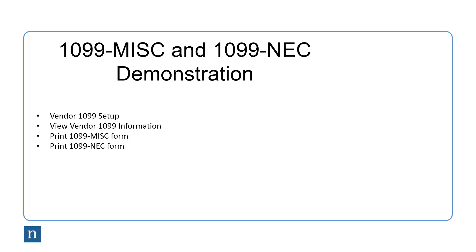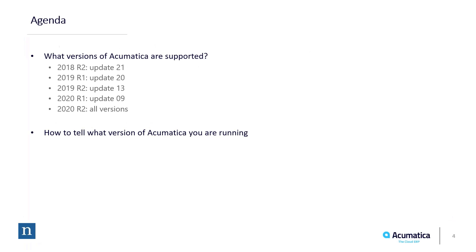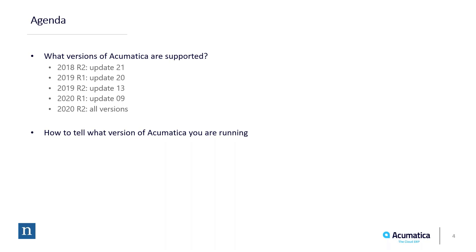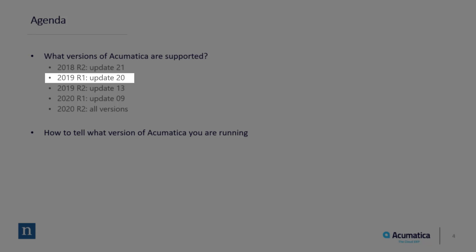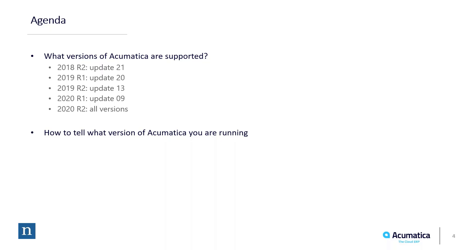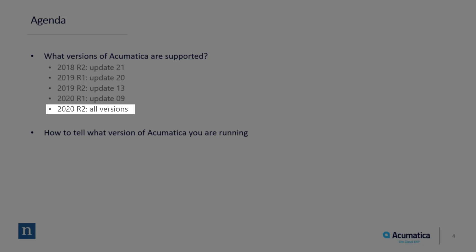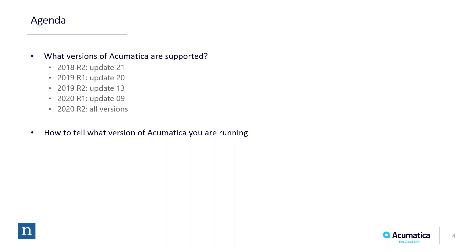There is nothing you really have to do — well, that's not exactly true. You do have to be at a current enough version of Acumatica to have this functionality. If you're on version 2018 R2, you must be at update 21 or higher. If you're on version 2019 R1, you must be on update 13 or higher. If you're on version 2020 R1, update 9 or higher. If you're on version 2020 R2, all versions have this functionality. Acumatica is also getting ready to release version 2021 R1, which will have this functionality as well.